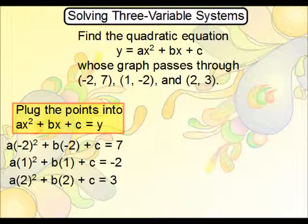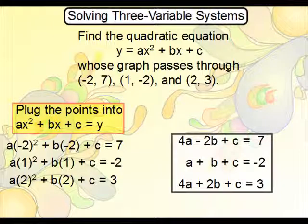Now if you simplify those, what you wind up with is this. This gives you 4a minus 2b plus c equals 7. That's what you're seeing here. This gives you a plus b plus c is negative 2. Then 4a plus 2b plus c equals 3. And then what you would do is you would solve this system.